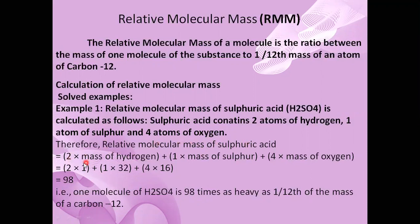The relative molecular mass = 2 × (mass of hydrogen) + 1 × (mass of sulfur) + 4 × (mass of oxygen). So: 2 × 1 + 1 × 32 + 4 × 16 = 2 + 32 + 64 = 98. The molecular mass of sulfuric acid is 98, meaning it is 98 times one-twelfth the mass of carbon-12.